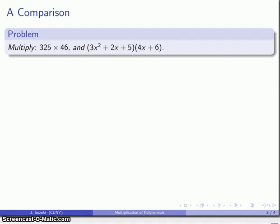So let's make a comparison here. I'm going to multiply 325 by 46 and I'm going to multiply this 3x² + 2x + 5 times 4x + 6.